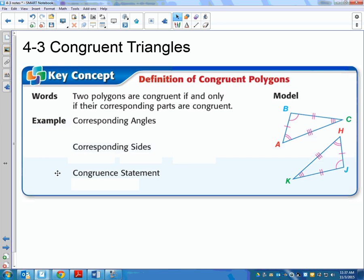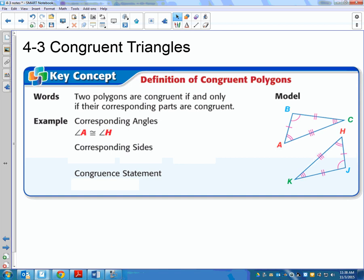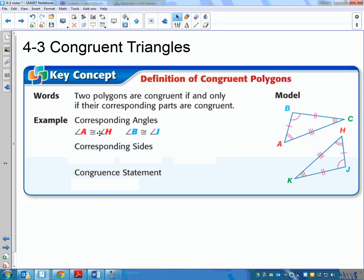So notice how they're marked with more than one thing. Corresponding angles, we could say angle A has to match up with angle H because they're both marked with two bars. Angle B would match up with J because they're both marked with one bar, because they both are marked the same, so that's how you know they go together. And then that means angle C has to be congruent to angle K.